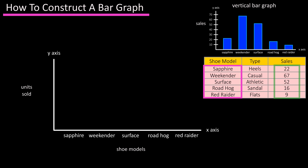Next, from the table find the highest value — 67 — round up to 70, and mark that somewhere near the top of the y-axis. Then make six more marks at equal distances going down the y-axis, marking them 60, 50, and so on down to 10.